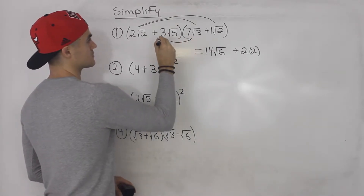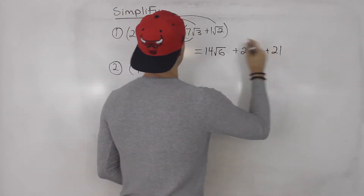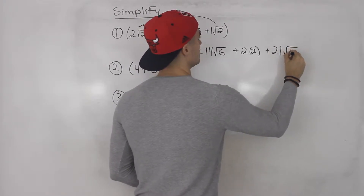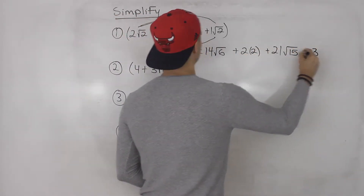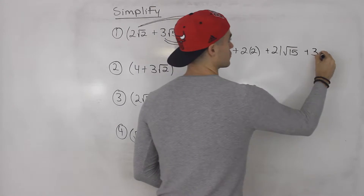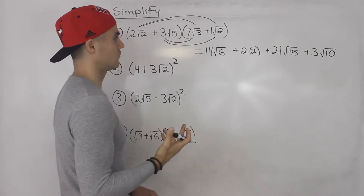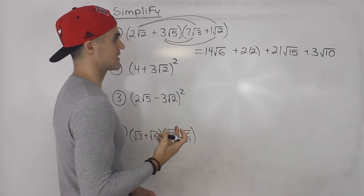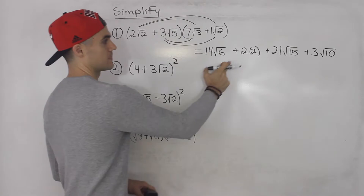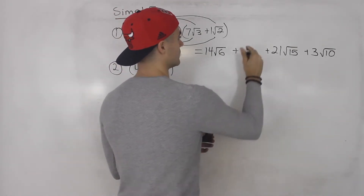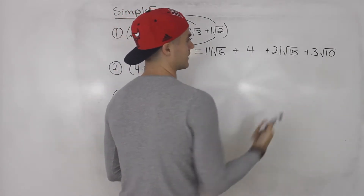Then we do the last two terms. 3√5 times 7√3: 7 times 3 gives us 21, and √5 times √3 gives us √15. Then 3√5 times √2: 3 times 1 gives us 3, and √5 times √2 gives us √10. From here, we look for like terms — and notice there are actually no like terms, and we can't simplify the radicals. √6, √15, and √10 can't be simplified.